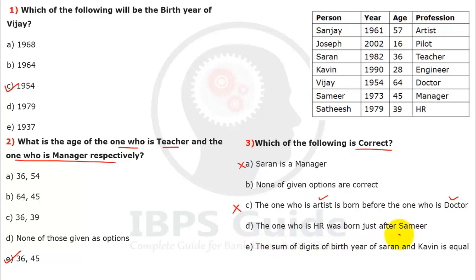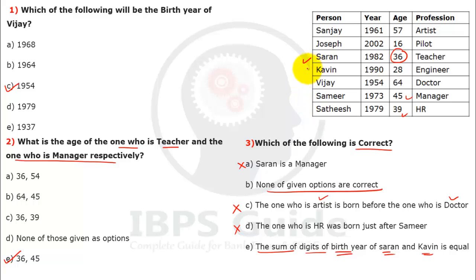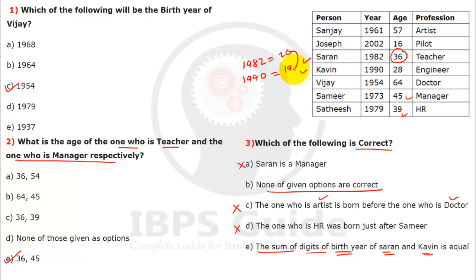Question: What is the birth year of Vijay? From our table, Vijay's birth year is 1954 — option C is the correct answer. Question: What is the age of the one who is teacher and the one who is manager respectively? Teacher is 36, manager is 45 — option E is correct. Checking statement: the artist was born before the doctor — our artist is younger than the doctor, so this statement is false. HR was born just after Samir — Satish came after Samir, not HR, so this is also false. None of the given options is correct.